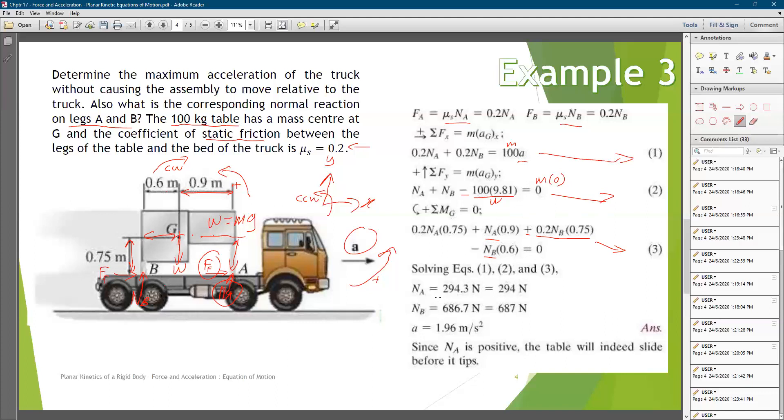And you will get N_A equal to 294 Newton, N_B is 687 Newton, and the acceleration a is 1.96 meter per second squared.